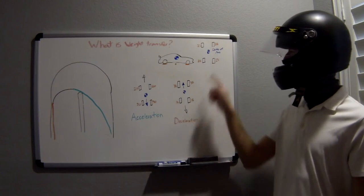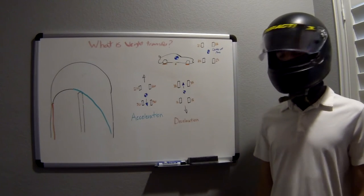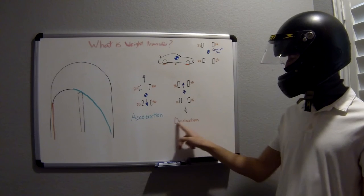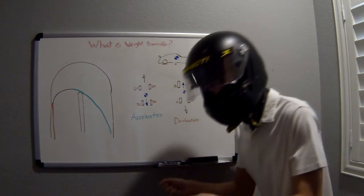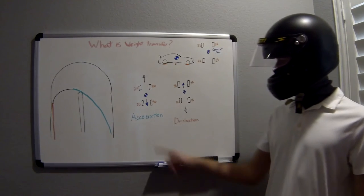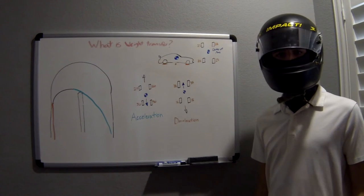Looking at each tire as though it were on scales, it becomes easier to see how the traction changes under different conditions. Under braking, weight transfers forward. This is why braking systems are much more aggressive on the front tires of vehicles. When you accelerate, weight transfers to the rear tires, explaining why many sports cars are rear-wheel drive.